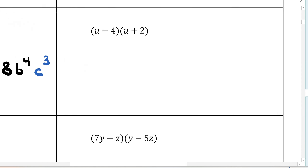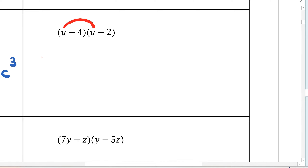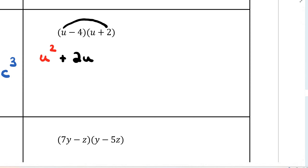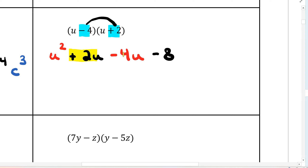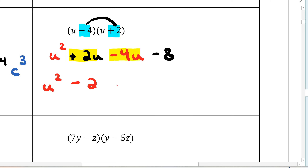Now we get into some FOIL questions. So u times u is going to be u to the power of 2. Then u times 2 is going to be positive 2u. Working the inside: negative 4 times u is going to be negative 4u. And finally negative 4 times positive 2 is negative 8. The last thing with FOIL is to combine the second and third terms: positive 2u minus 4u gives negative 2u, so the final answer is u squared minus 2u minus 8.